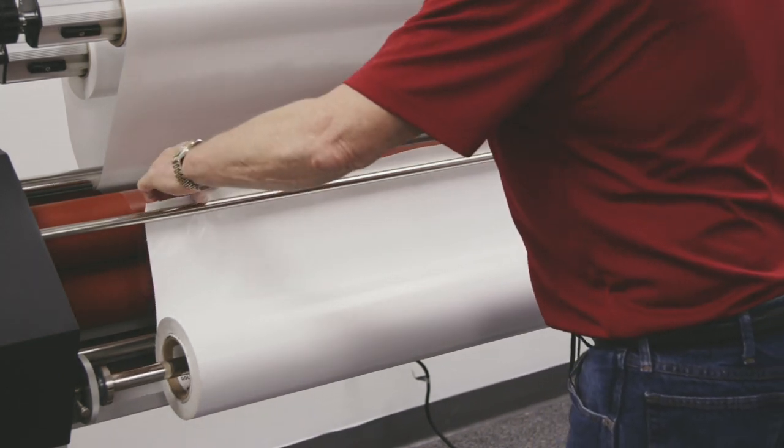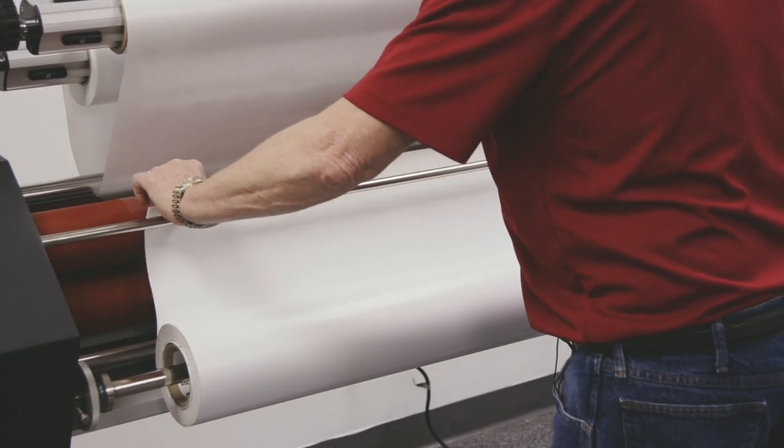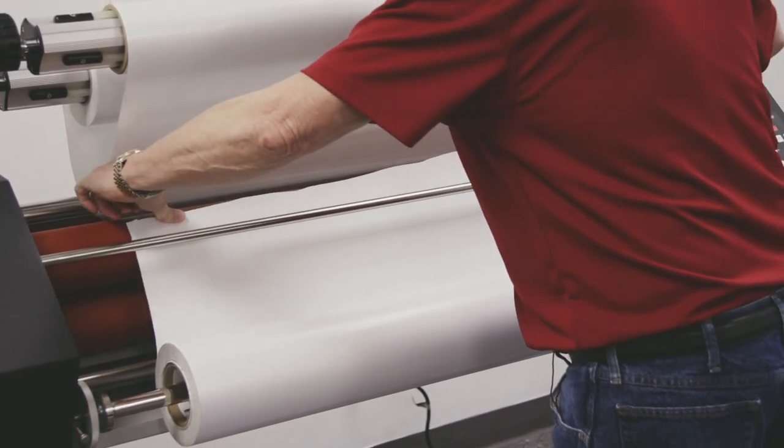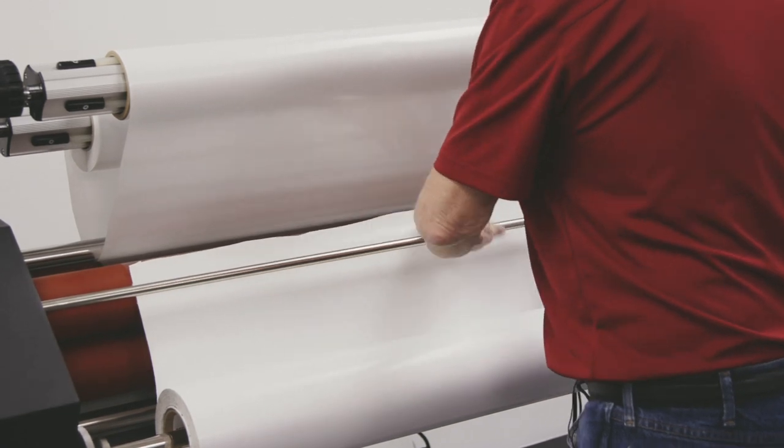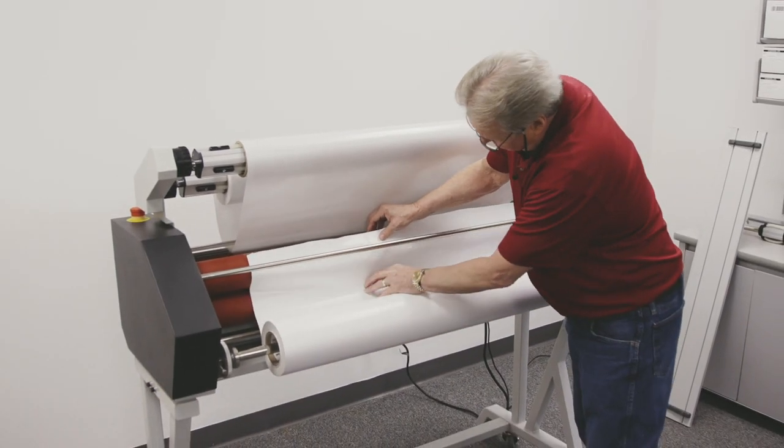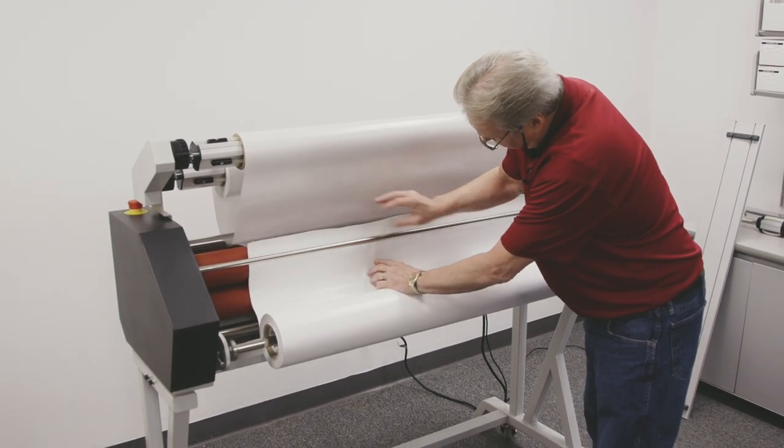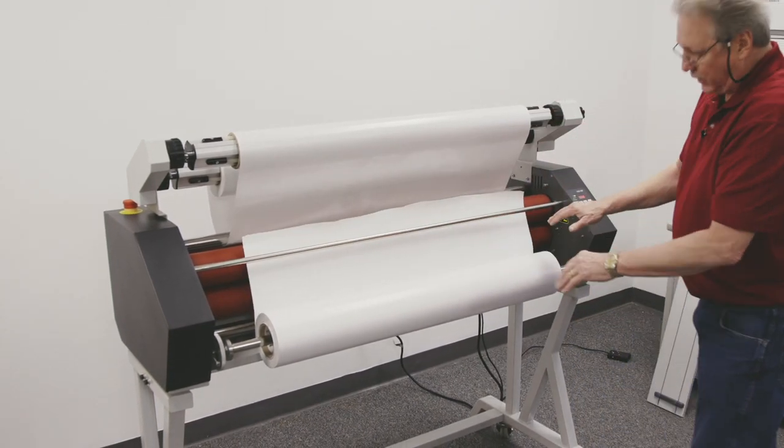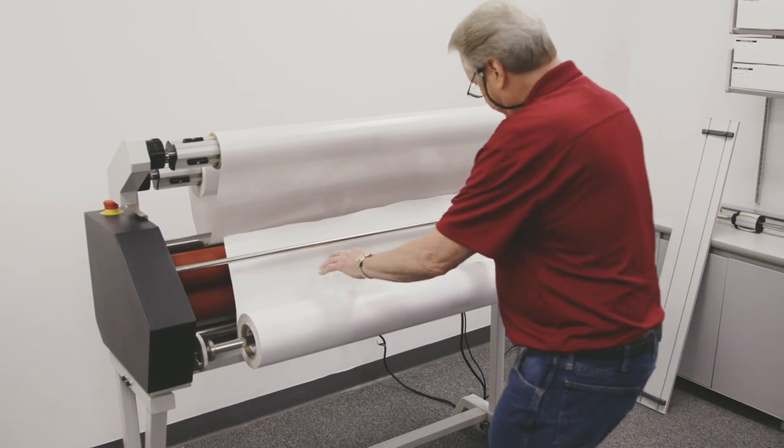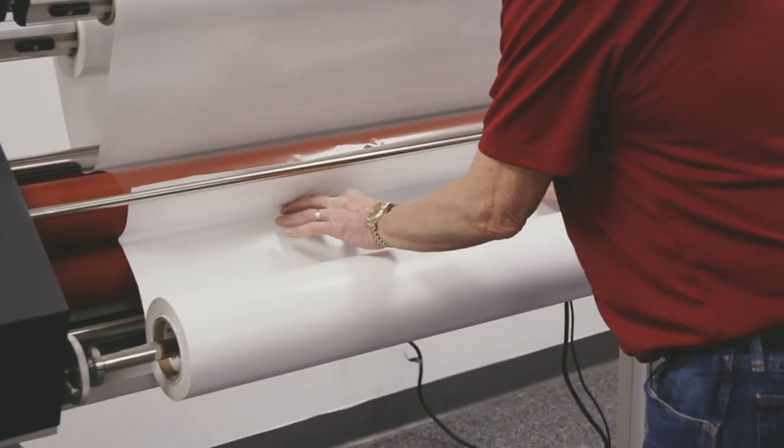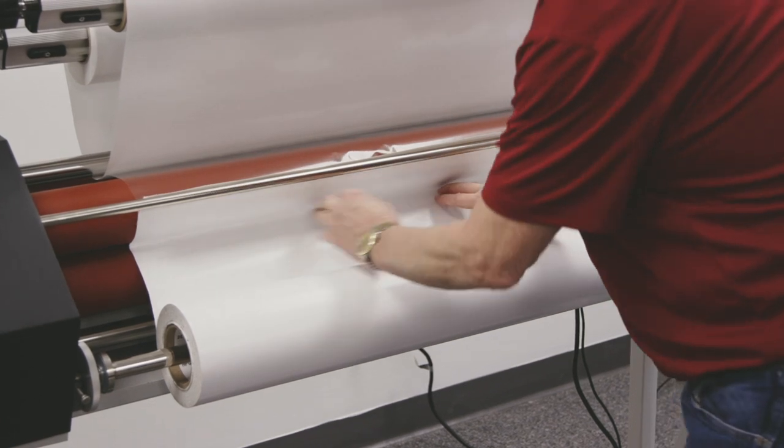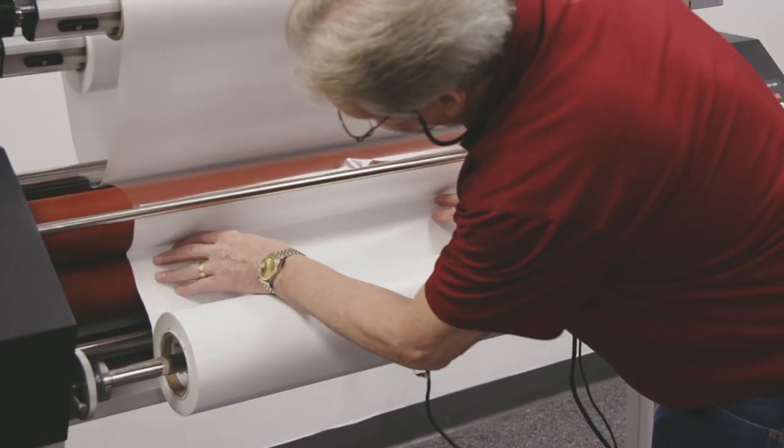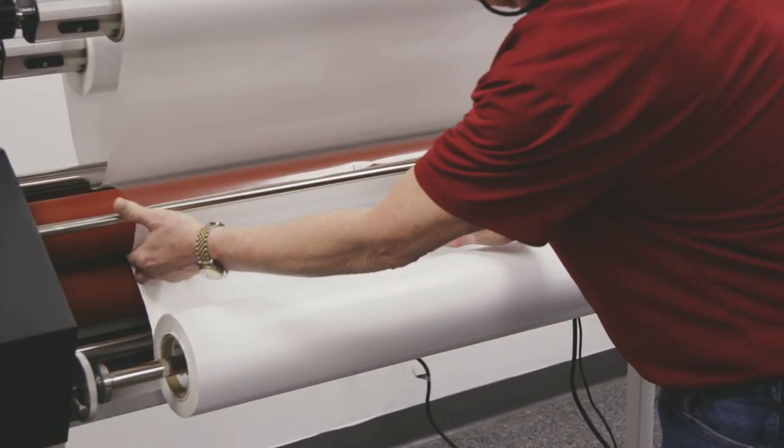When I do this I want to make sure that I get a good wrap on it like this and then give myself a little bit of slack here and I'm going to tuck this into the nip area of the rollers. I'll push this in and when I do this I want to make sure that I have this nice and flat against those rollers.